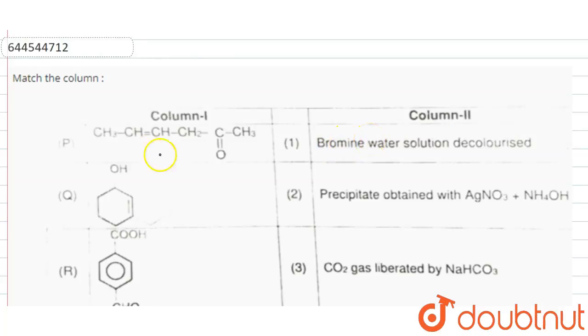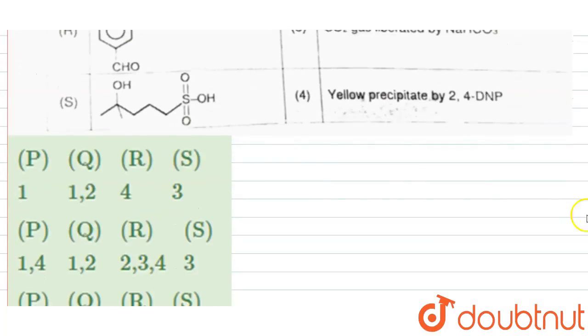What is alkenes? In alkenes, the reddish brown color of bromine water decolorized by C double bond C group. It will form a dibromo compound.